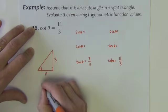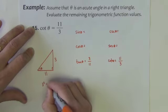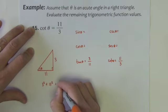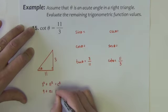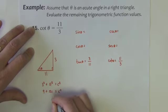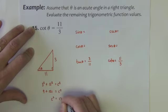I do need the hypotenuse here so I need to do 3 squared plus 11 squared equals c squared. That's 9 plus 121.